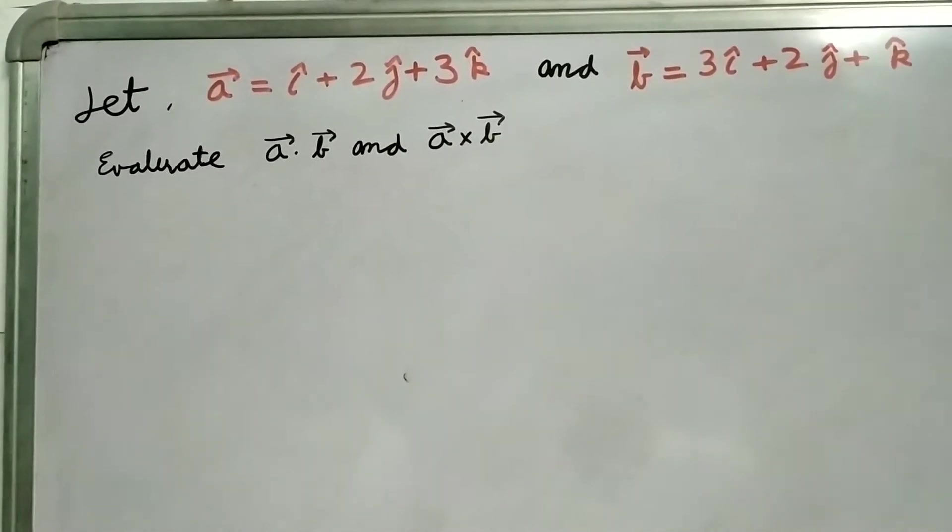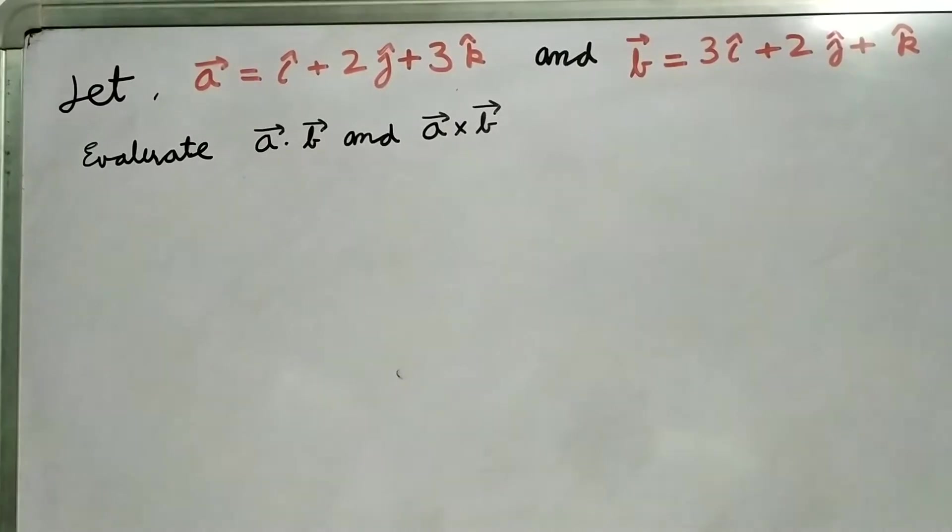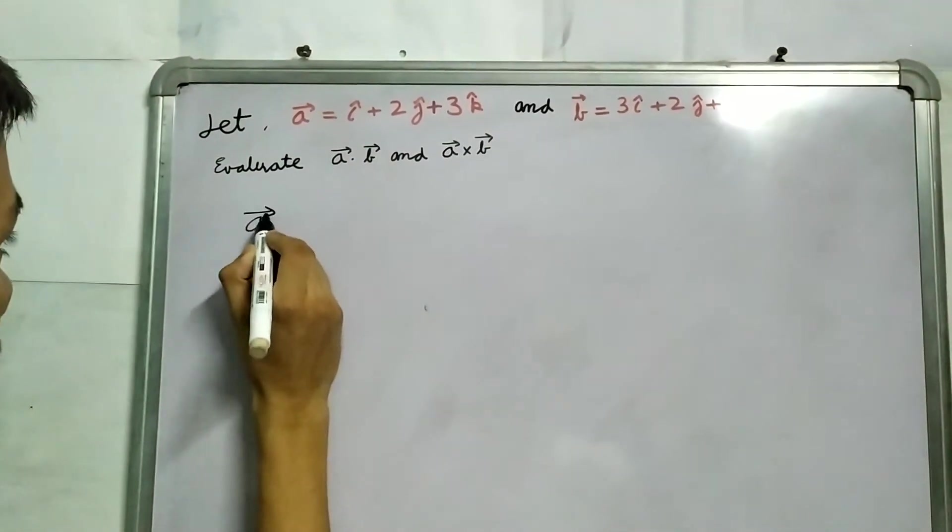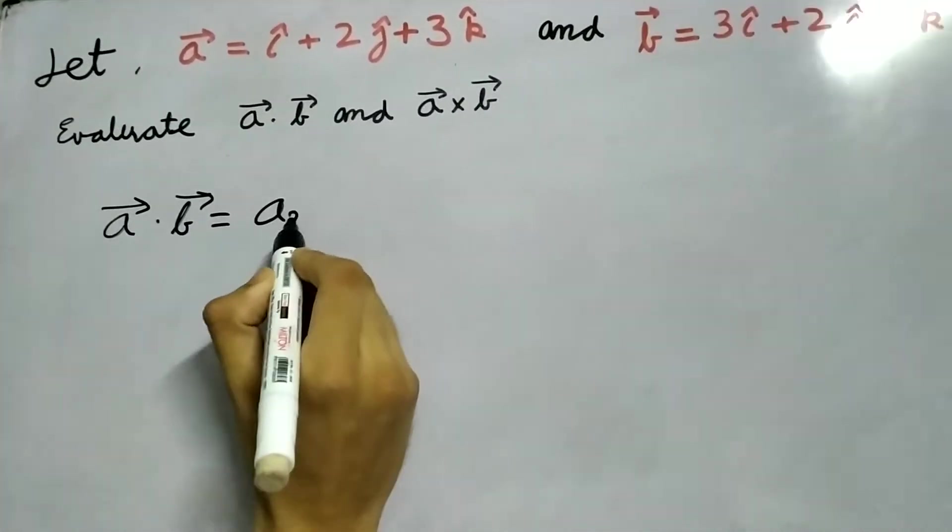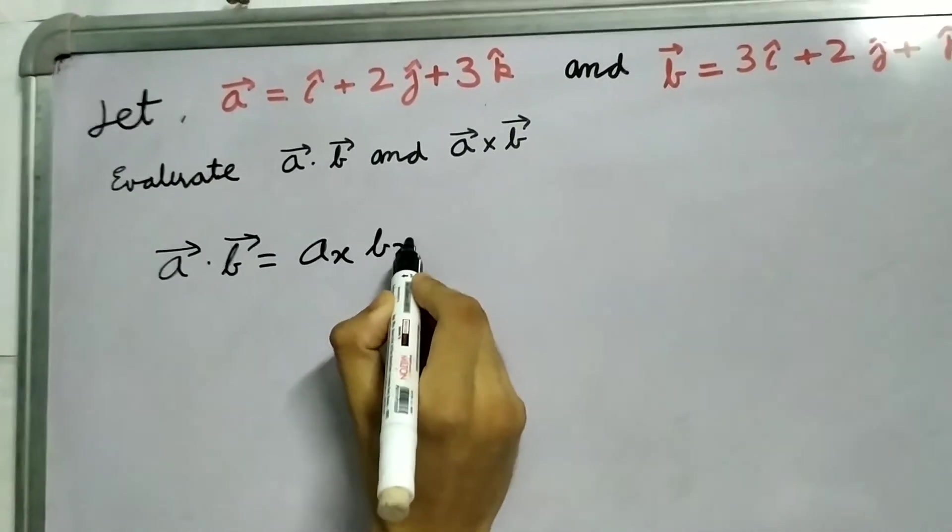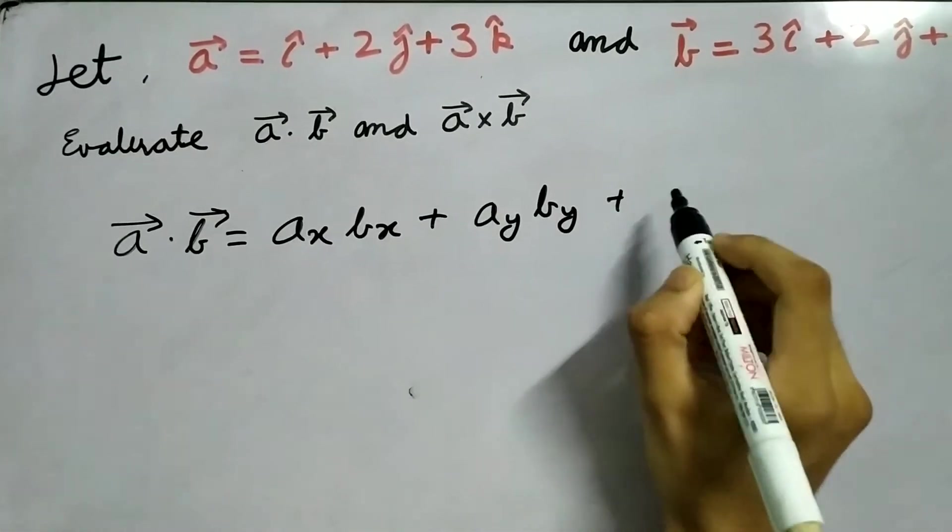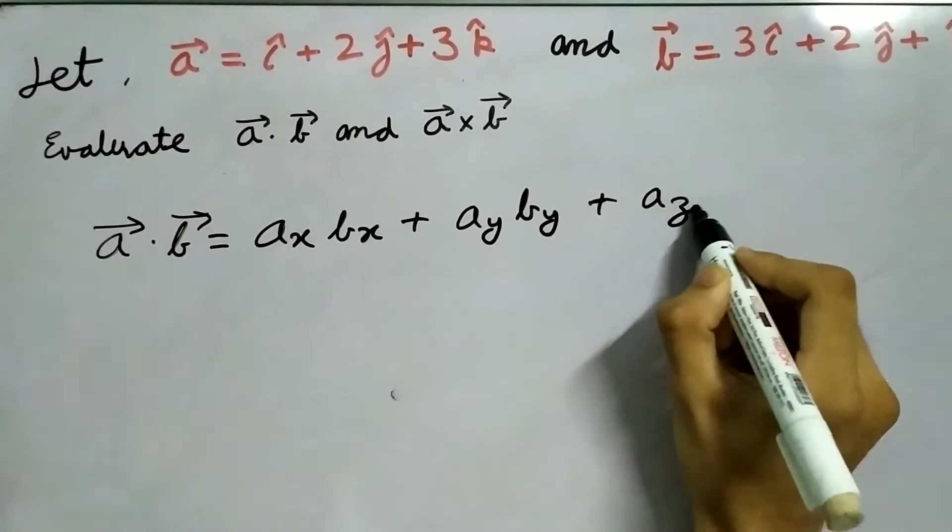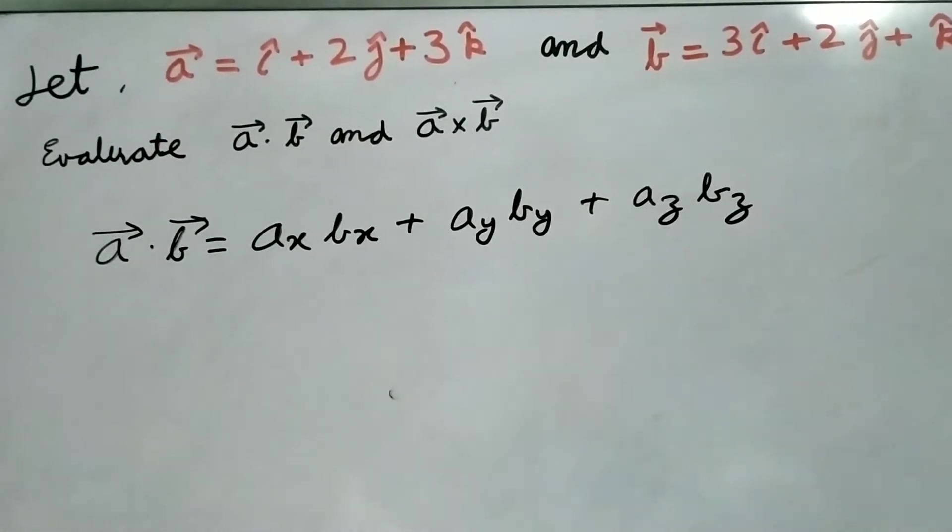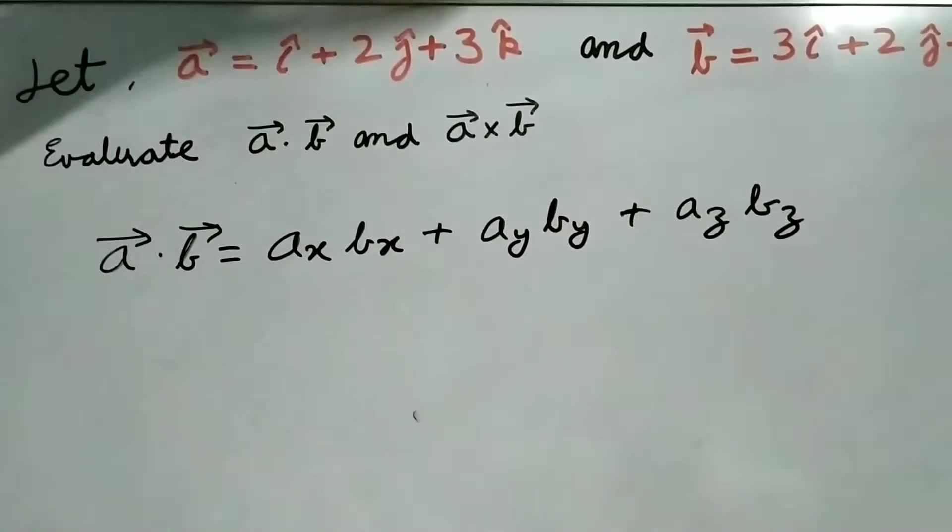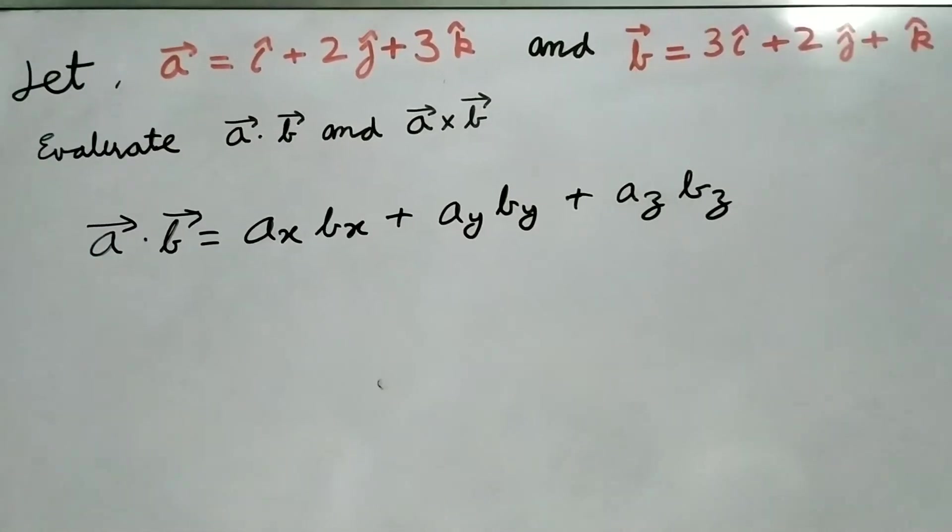A dot B and A cross B. Well let's start with the dot product. So A dot B is A_x B_x plus A_y B_y plus A_z B_z. It's telling us to take the components, multiply them and add them up.